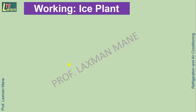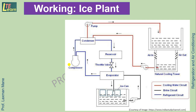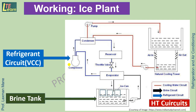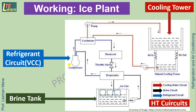Let's understand the working of an ice plant. It has mainly three circuits of heat transfer: the refrigerant circuit, representing a vapor compression cycle consisting of a compressor, condenser, expansion valve, and evaporator; the brine circuit, consisting of a brine tank, brine pump, and ice cans; and the cooling water circuit, consisting of a cooling tower and pump.